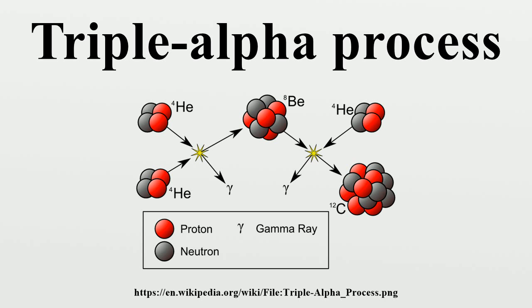Then in its core there will be many beryllium-8 nuclei that can fuse with another helium nucleus to form carbon-12, which is stable. The net energy release of the process is 7.3 × 10^14 J.